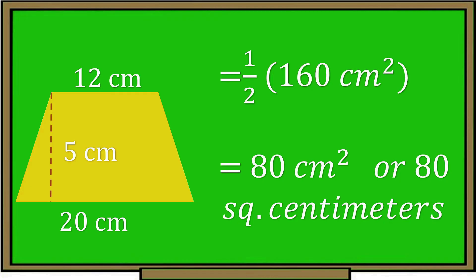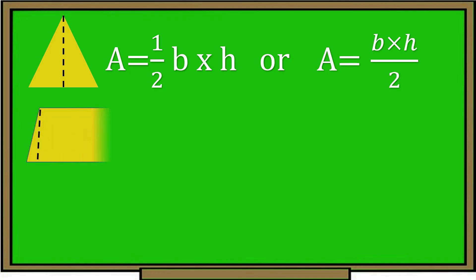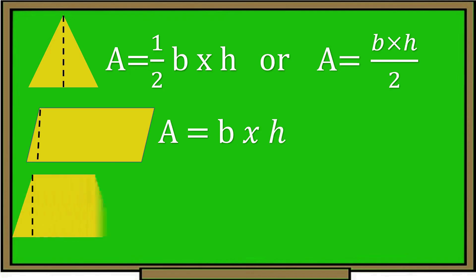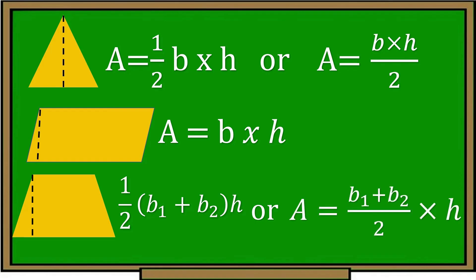Did you get the correct answer? Fantastic! Class, bear this in mind — the following formulas can help us find the area of other figures. Area of a triangle equals one half base times height, or base times height divided by 2. Area of a parallelogram equals base times height. Area of a trapezoid equals one half, base 1 plus base 2, times height — or base 1 plus base 2 divided by 2 times height.